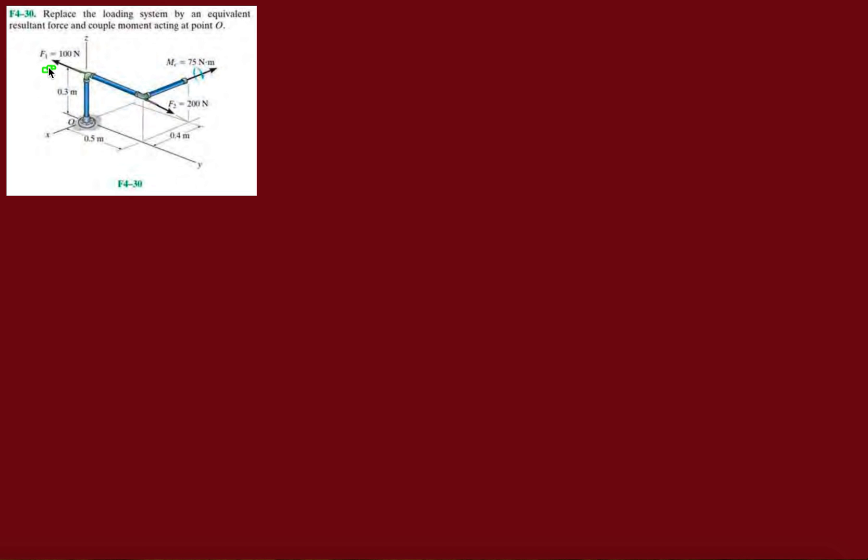We're replacing all these forces that we see, F1, F2, any other moments included, this moment that they give us, we're grouping them up into one resultant force and one resultant moment and putting them at point O. The reason why we do this is if you're designing some structure that's going to hold this, you want to make sure that it's able to support all those forces and can withstand the moments and the torques that it's going to be experiencing. You'll see this in mechanics of materials and maybe an engineering analysis class or something like that.